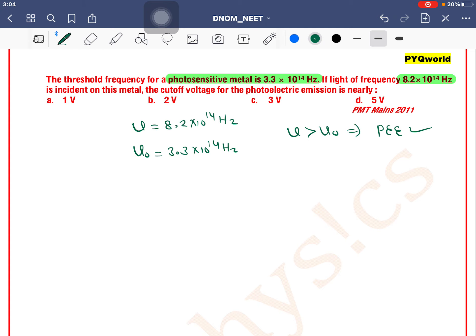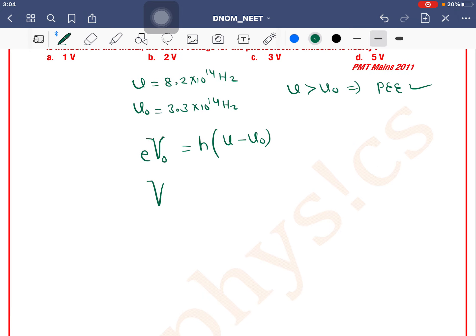The relation between ν and ν₀ along with cutoff voltage can be written as eV₀, where V₀ is the cutoff voltage or stopping potential, equals h(ν - ν₀).